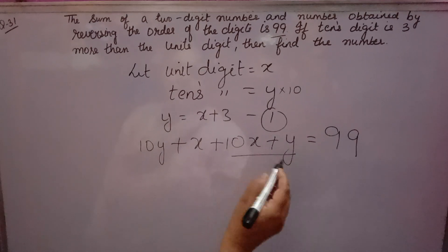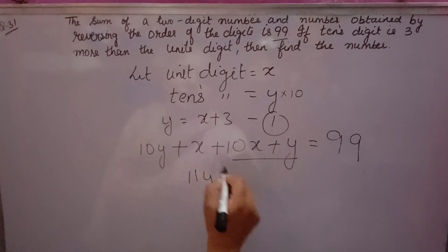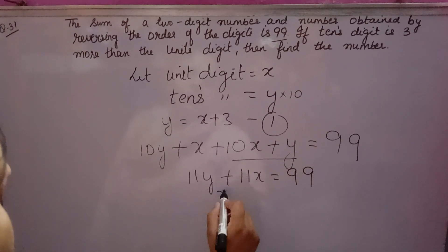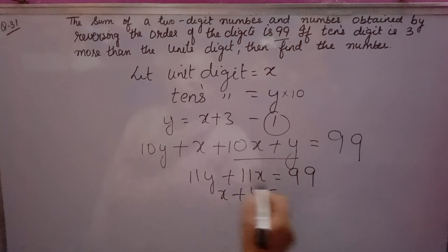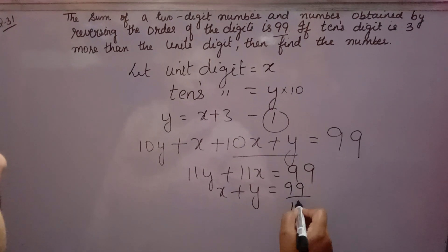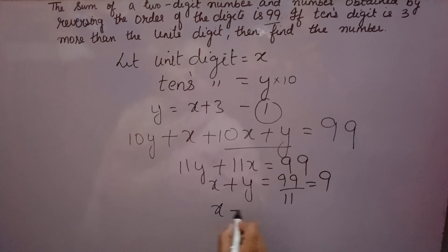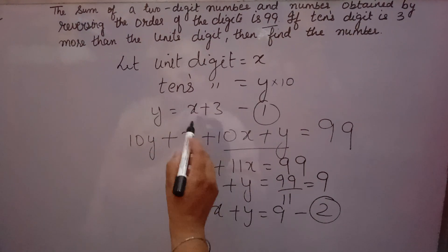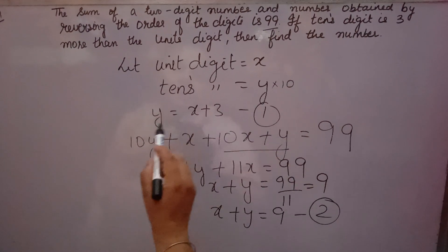The sum equals 99, so 10y plus x plus 10x plus y equals 99. This simplifies to 11y plus 11x equals 99, which gives x plus y equals 99 divided by 11, that is 9. So x plus y equals 9 is the second equation. Now I'm using the substitution method, though you can use elimination method also.